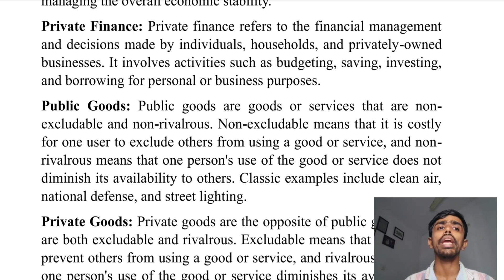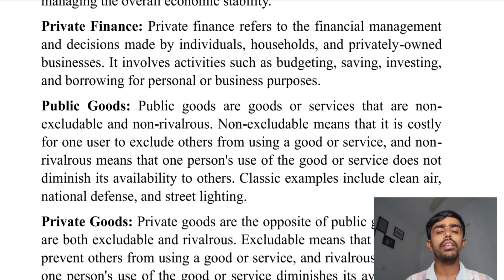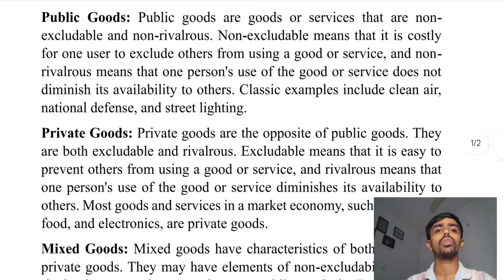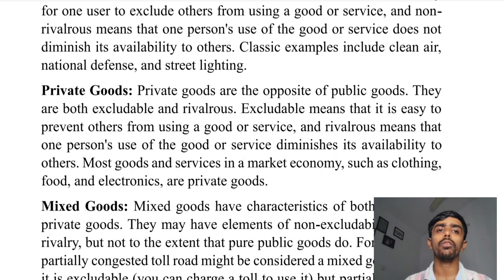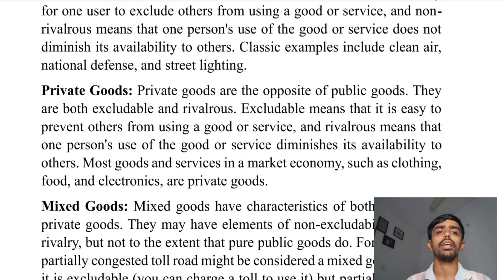Classical examples of public goods include clean air, national defense, street lights, and public roads. Private goods are the opposite of public goods — they are both excludable and rivalrous.